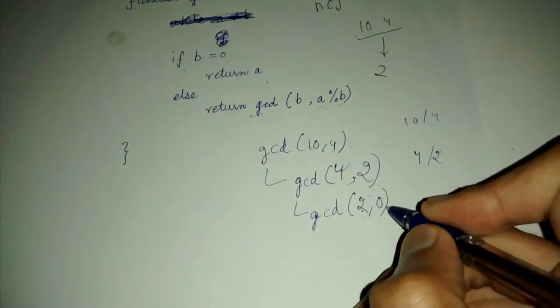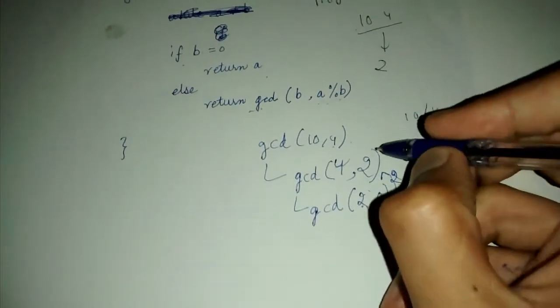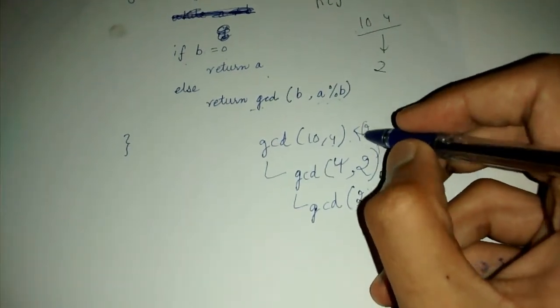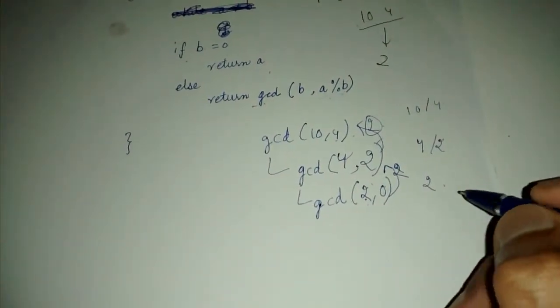So this will return 2 to its parent caller. It will return 2 to its caller. So the final answer will be returned as 2. We will be printing 2 if we are using a print statement in this case.